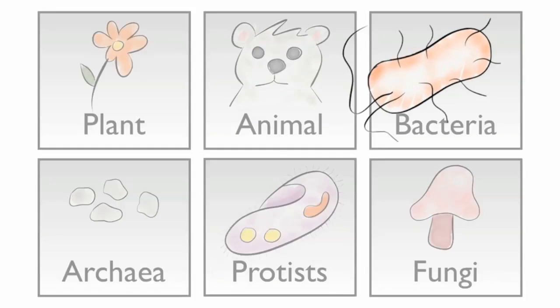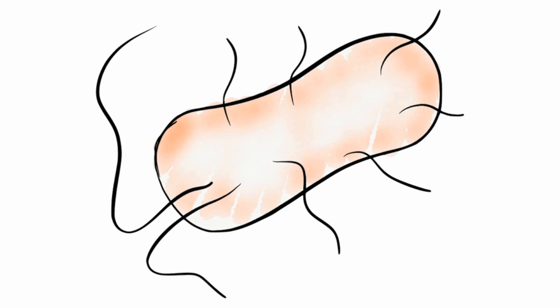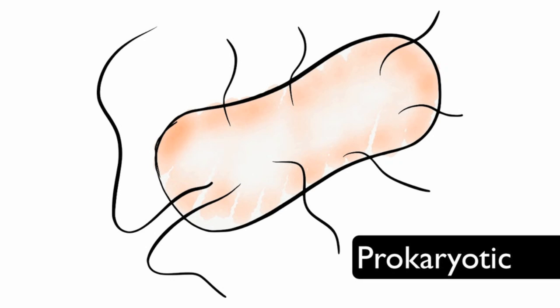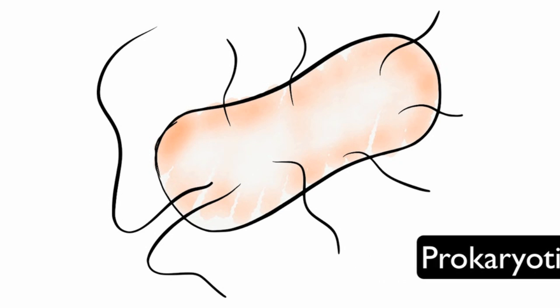Bacteria are single-celled organisms that live almost everywhere. Bacteria cells are different from animal cells because they do not have a nucleus. Cells without a nucleus are called prokaryotic.